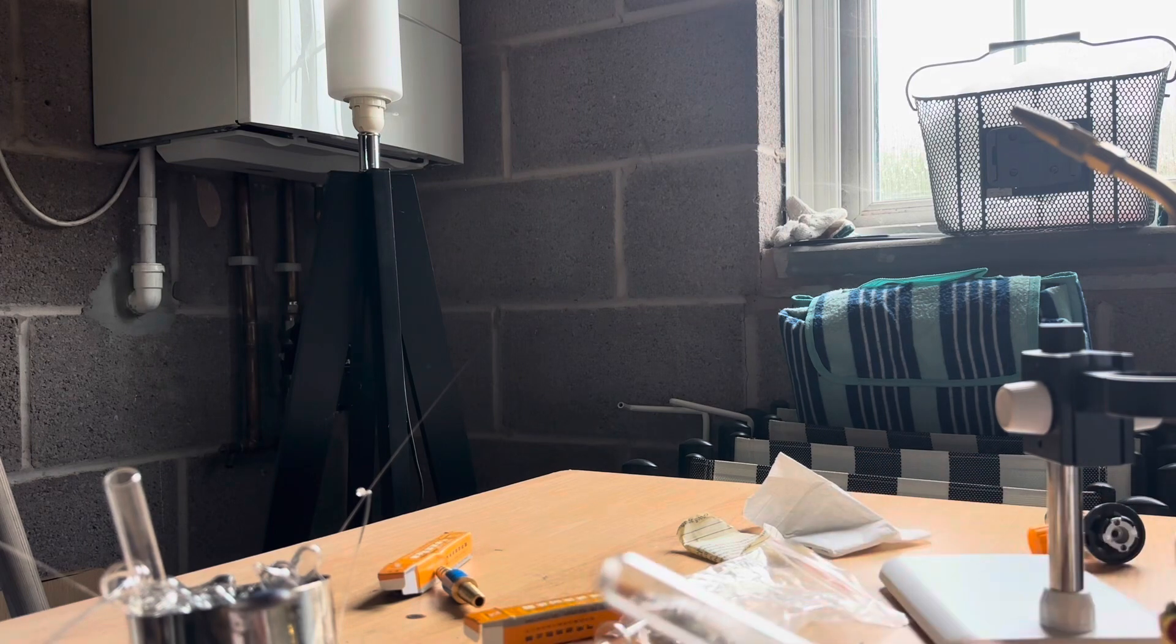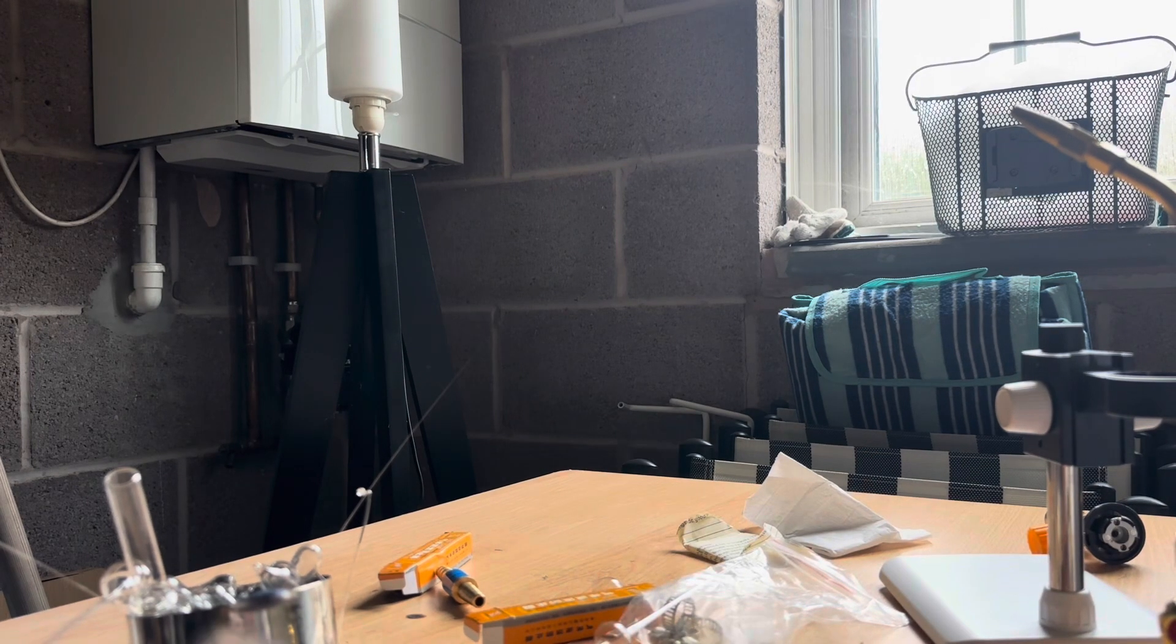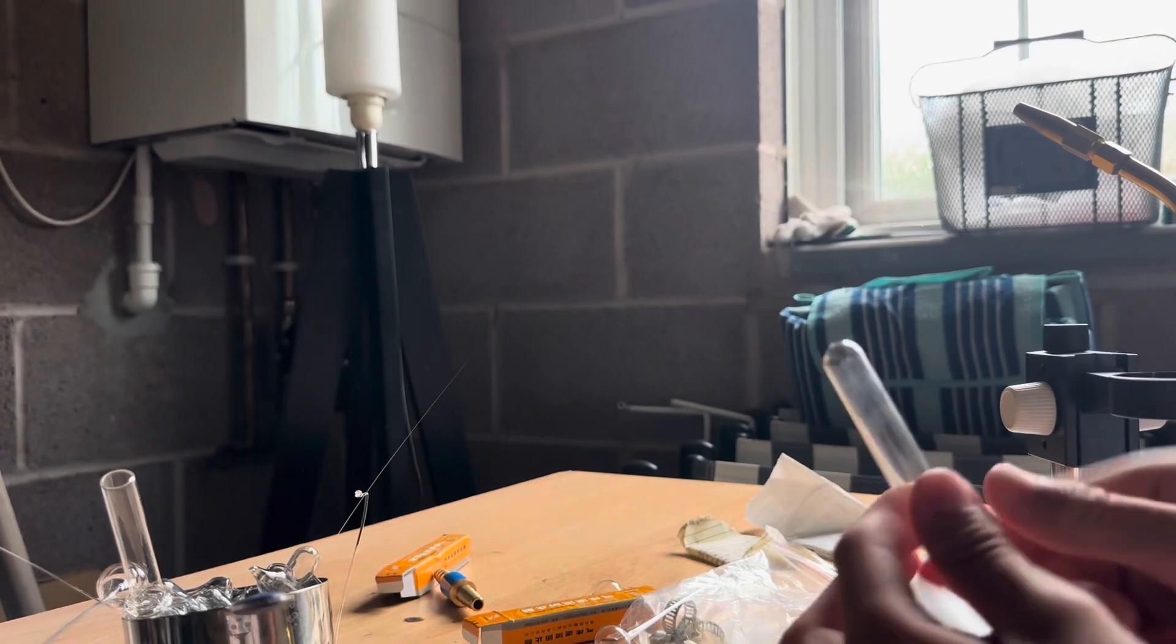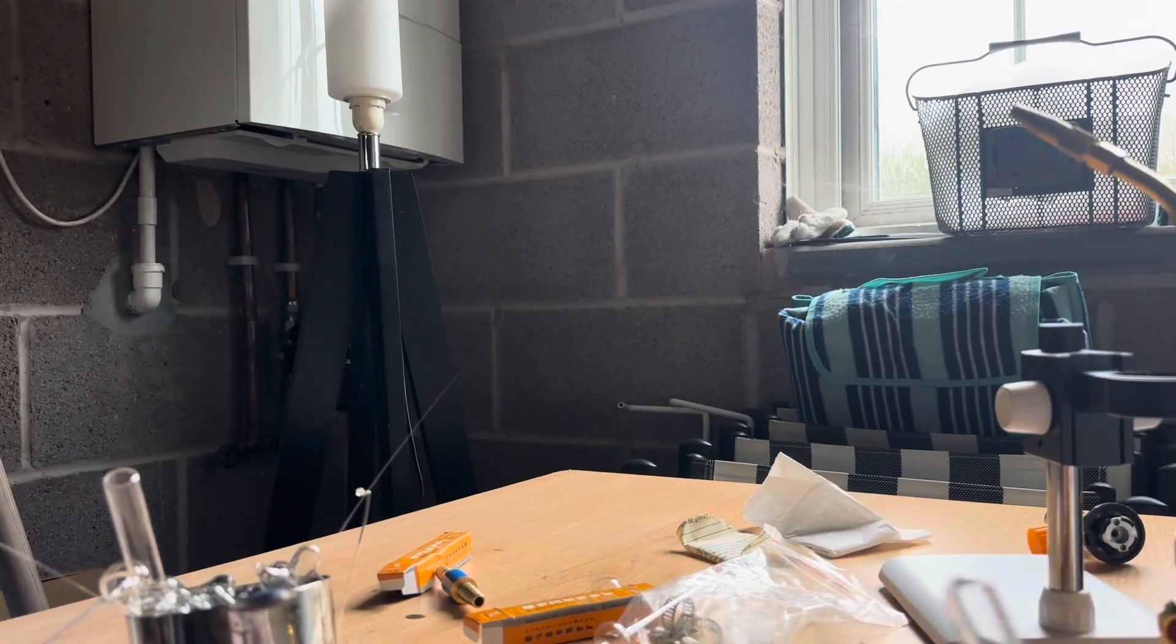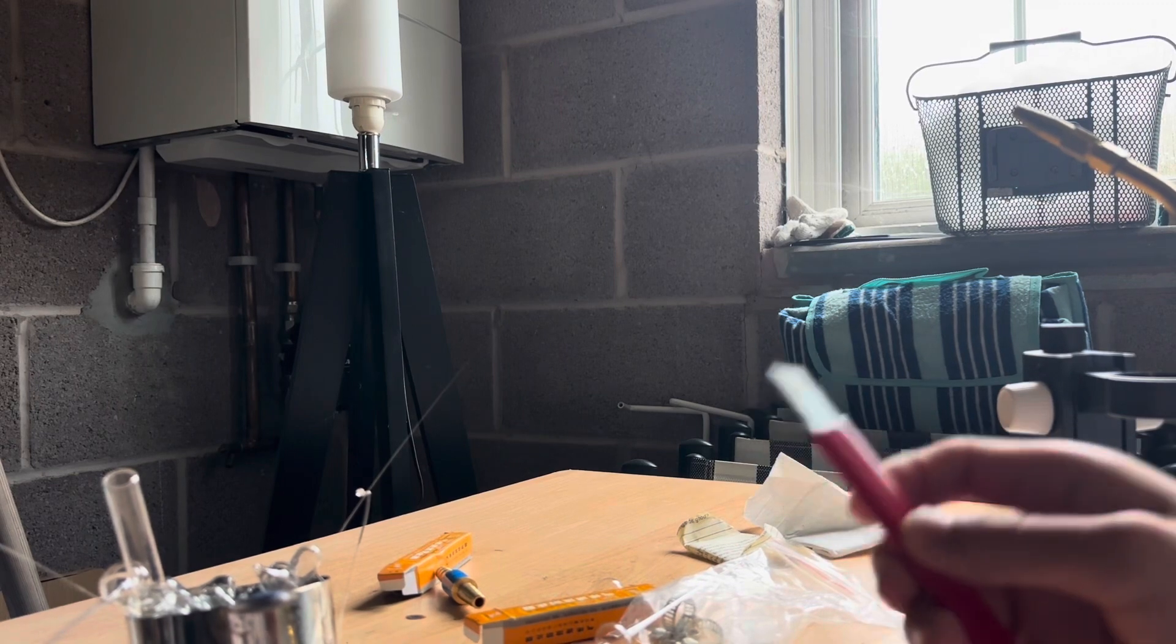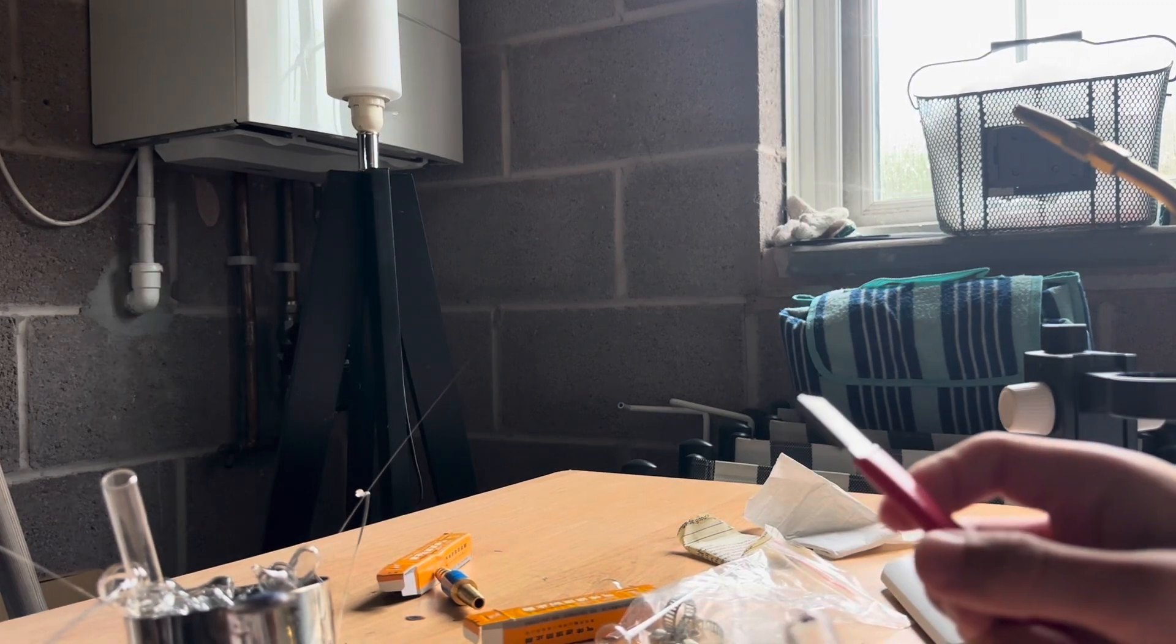Here, I have a thick section of a glass tube, as you can see here. I want to remove the top section of the glass tube off. To do this, I will have to use something called a carbide scribe.